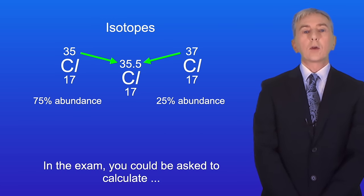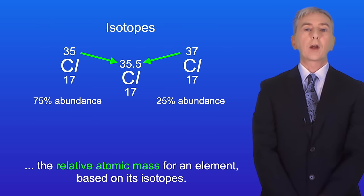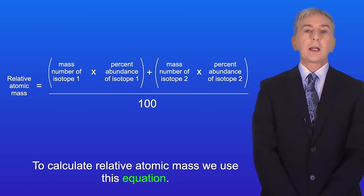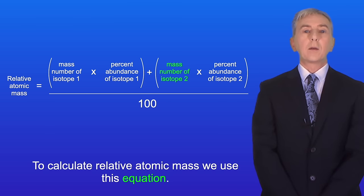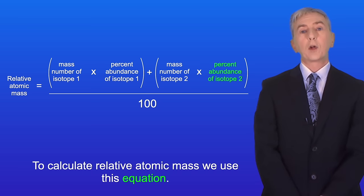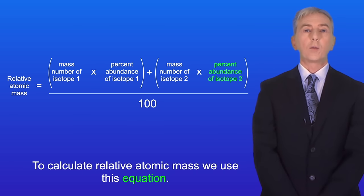In the exam you could be asked to calculate the relative atomic mass for an element based on its isotopes. To calculate relative atomic mass we use this equation. The relative atomic mass is the mass number of isotope one multiplied by the percent abundance of isotope one, added to the mass number of isotope two multiplied by the percent abundance of isotope two, and we divide all of this by 100.